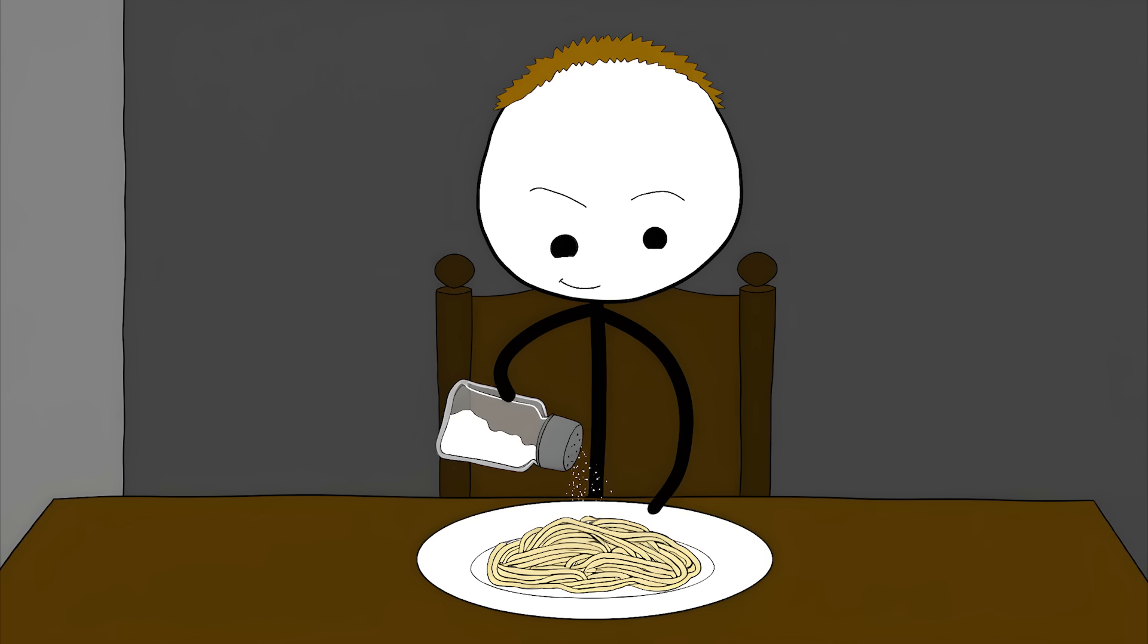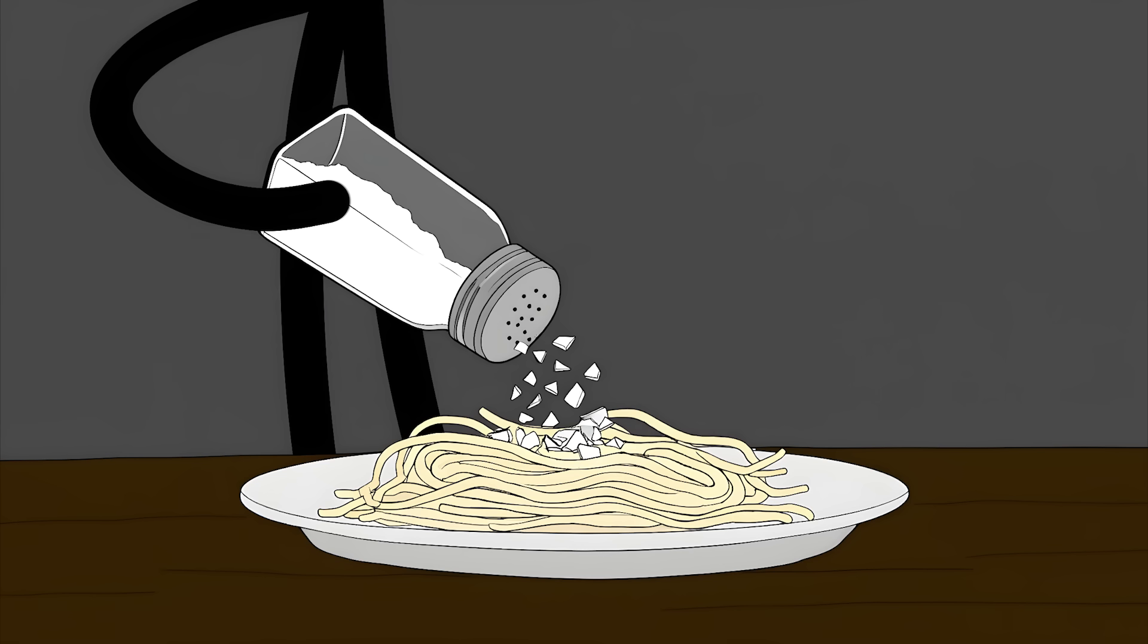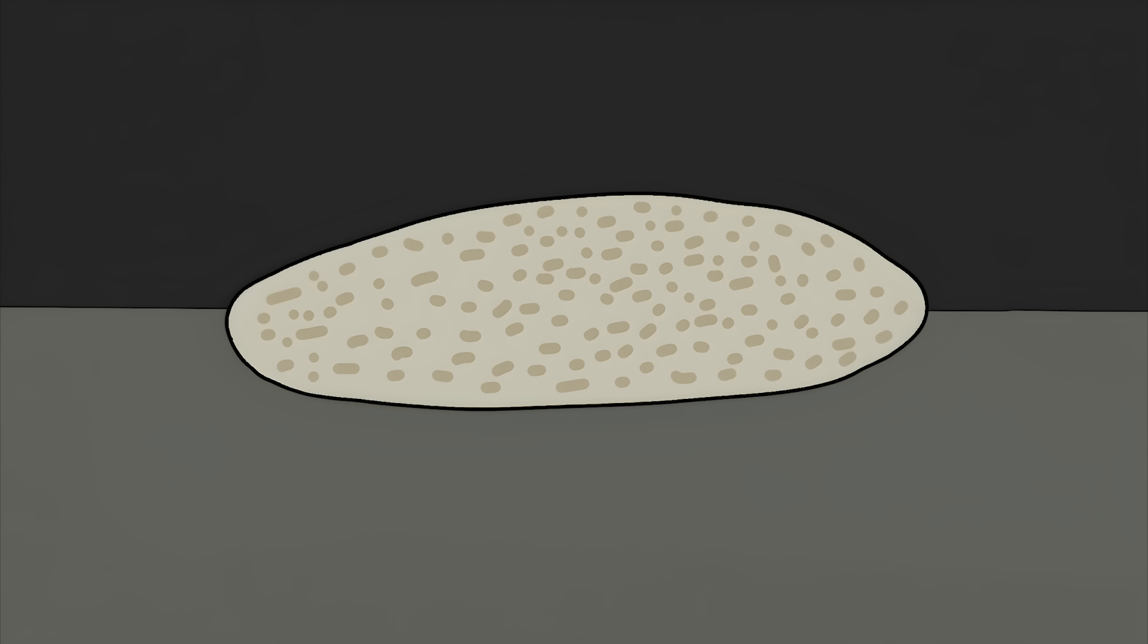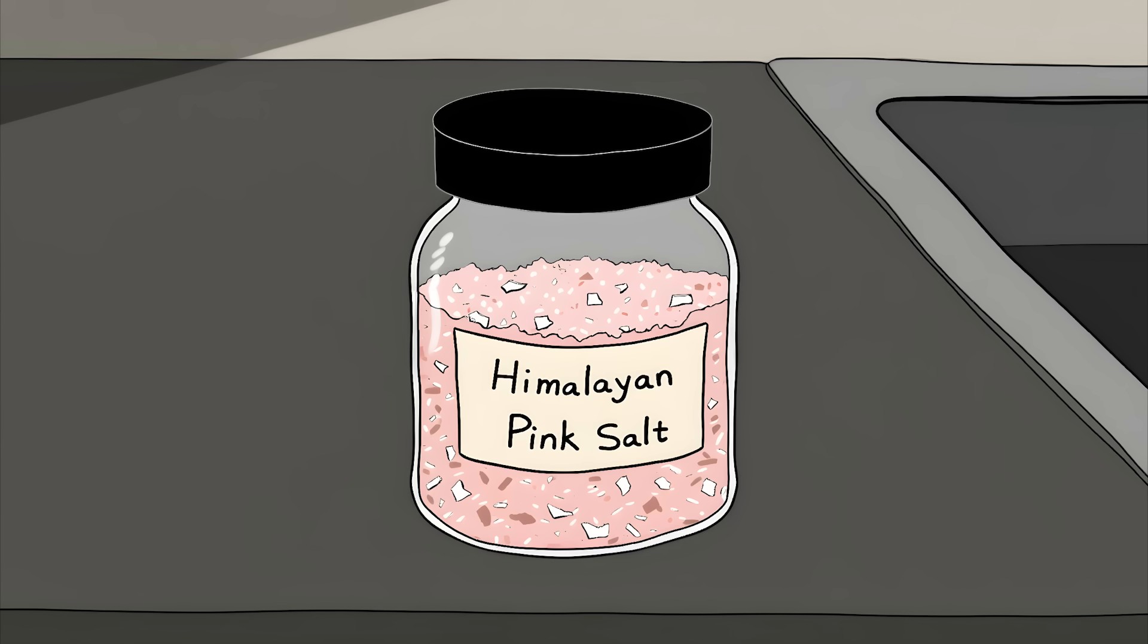5. The plastic in your salt. So you're sitting at dinner, reaching for the salt shaker, thinking you're just adding some taste to your bland pasta. But you're also seasoning your food with tiny pieces of plastic. Scientists tested salt from all over the world and found that over 90% of table salt brands contain microplastics. We're talking about pieces so tiny you could fit hundreds of them on a grain of rice. And before you rush to your fancy Himalayan pink salt, bad news, that's got plastic in it too.